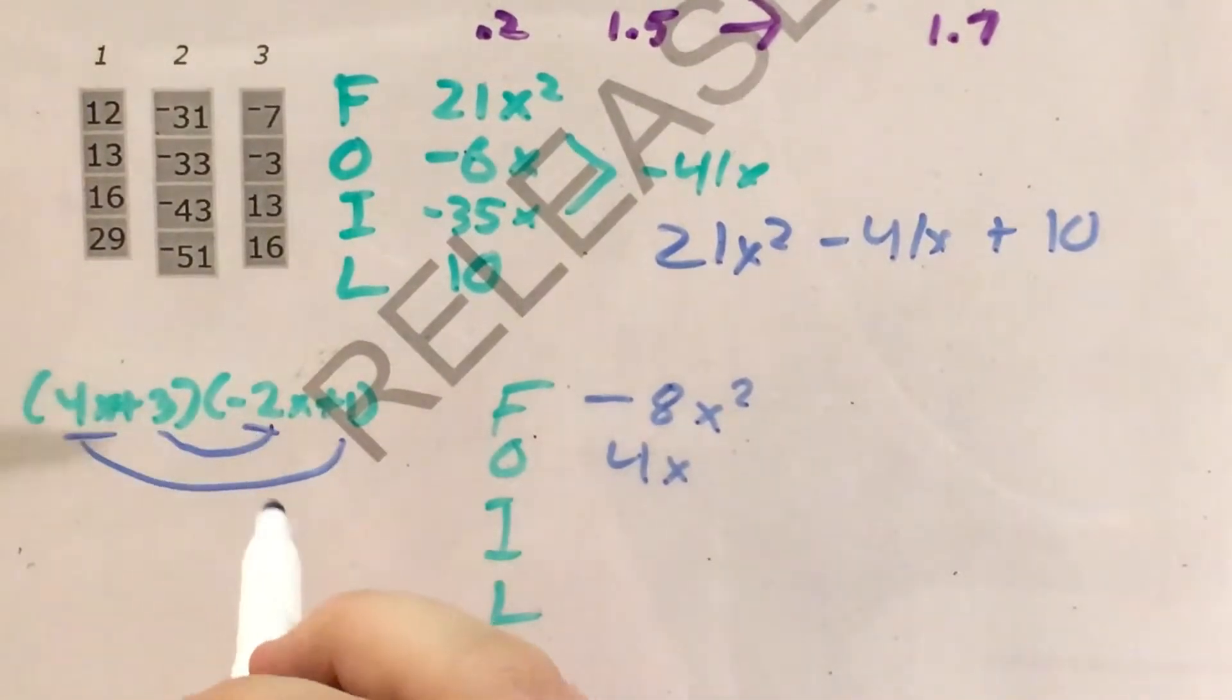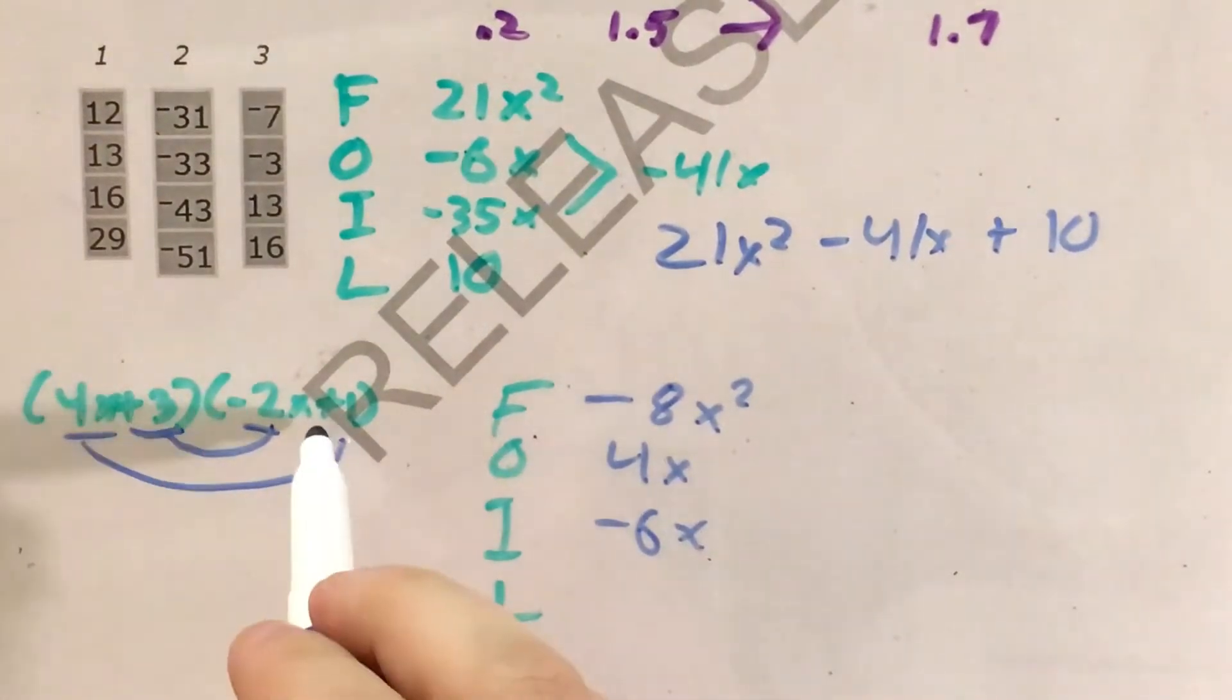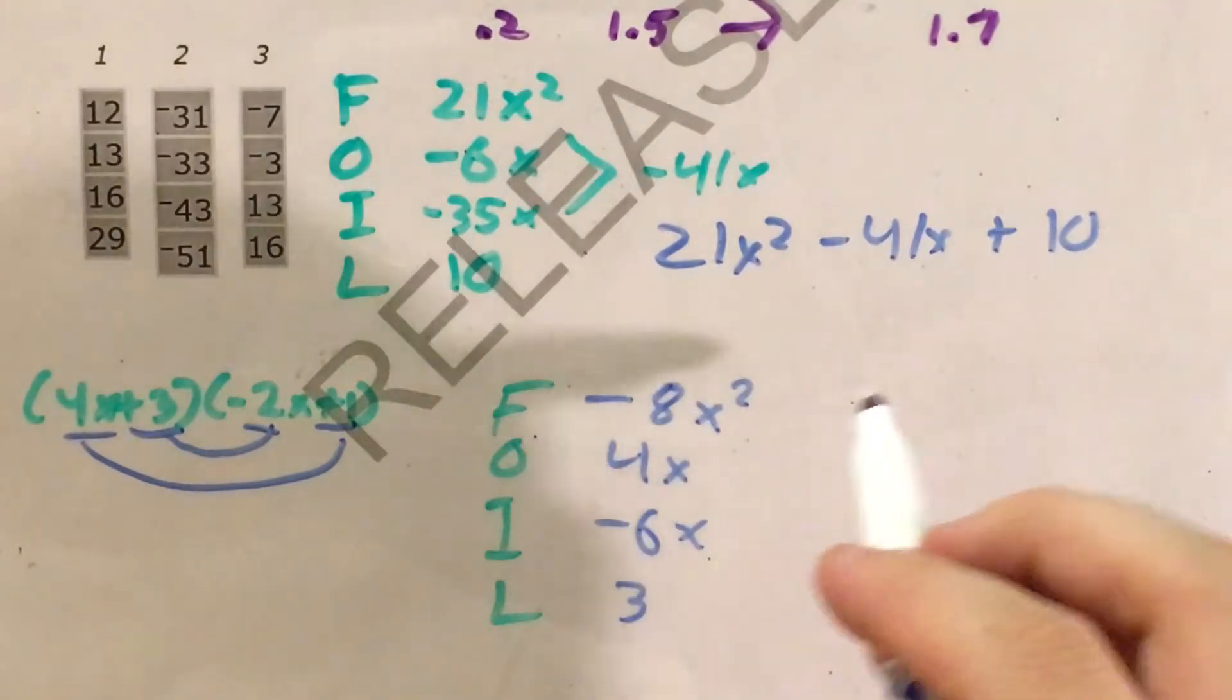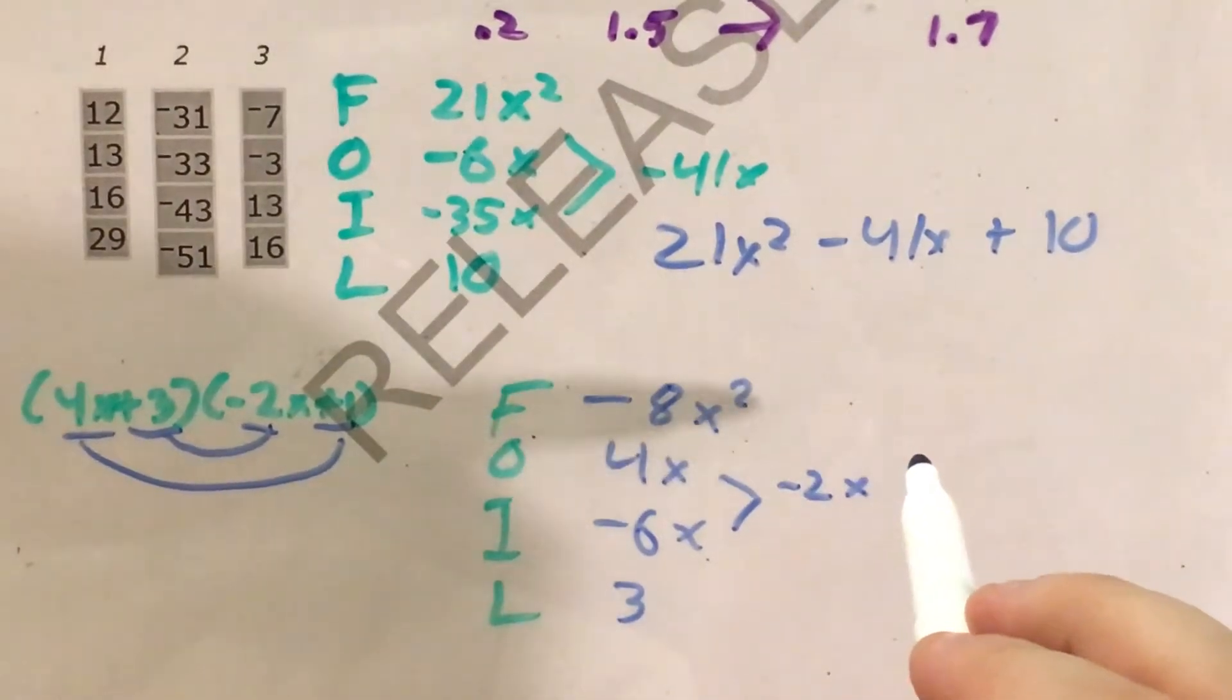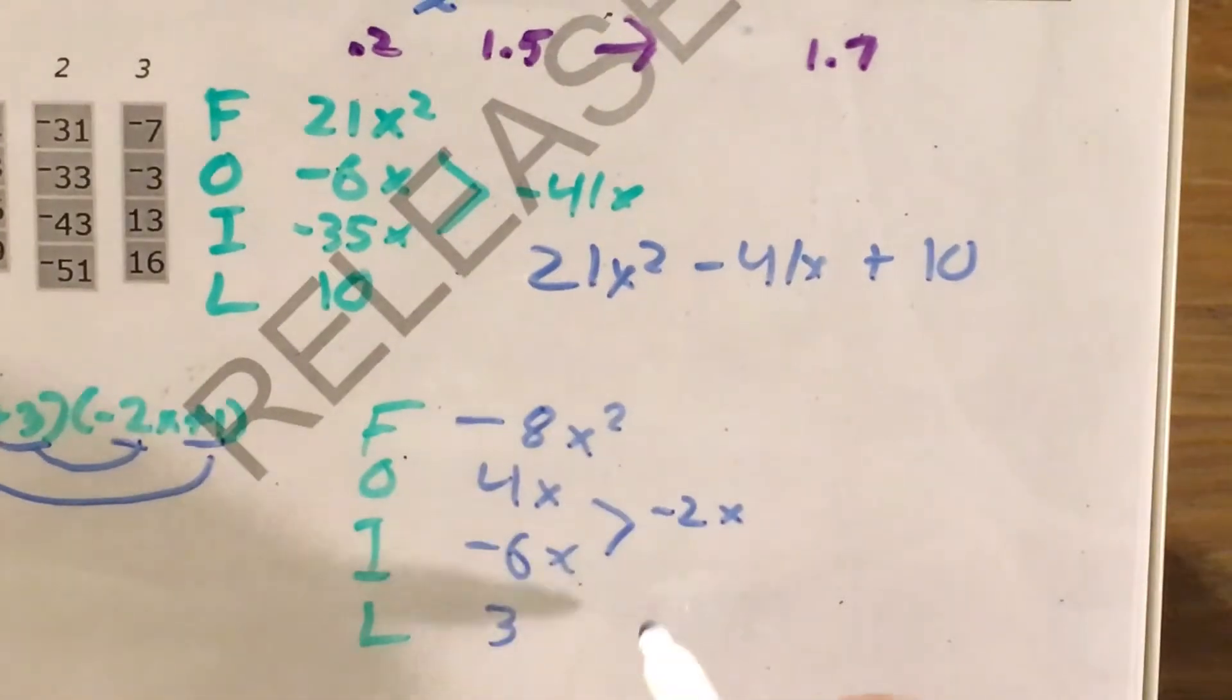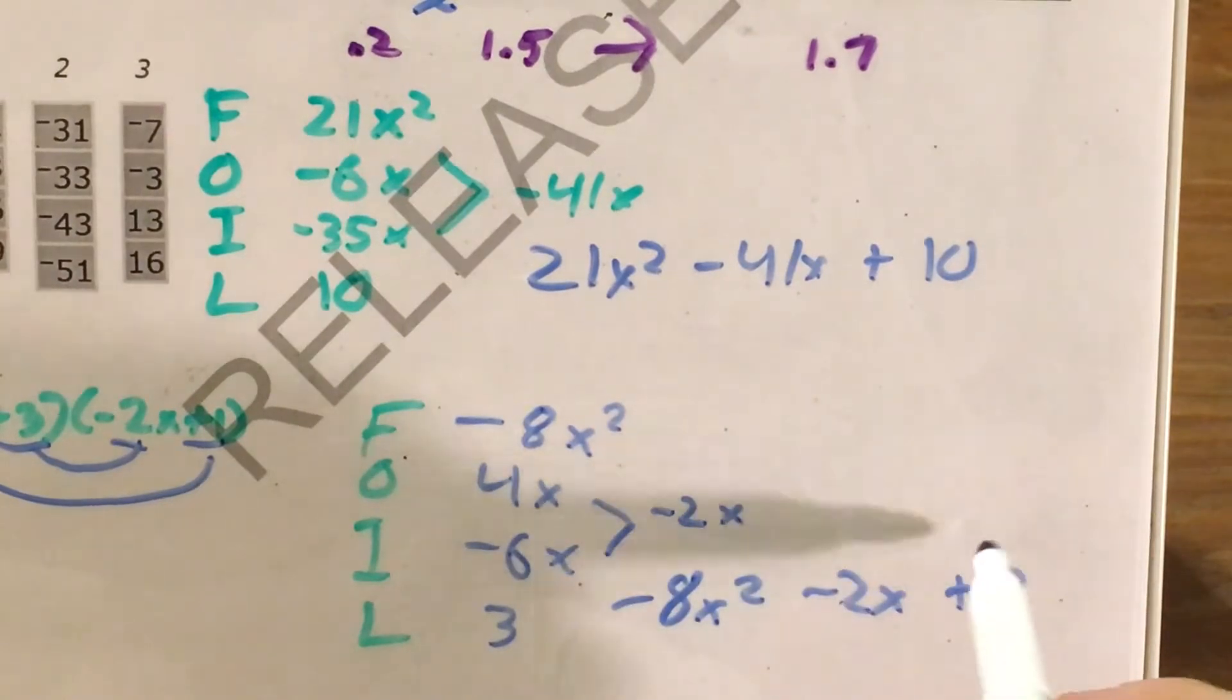For inside, 3 times negative 2x. 3 times negative 2 is negative 6, so that's negative 6x. And then for my last numbers, 3 times 1 is just 3. So this leaves me, after I combine like terms, 4x minus 6x is negative 2x. So I end up with, after all this, negative 8x squared minus 2x plus 3.